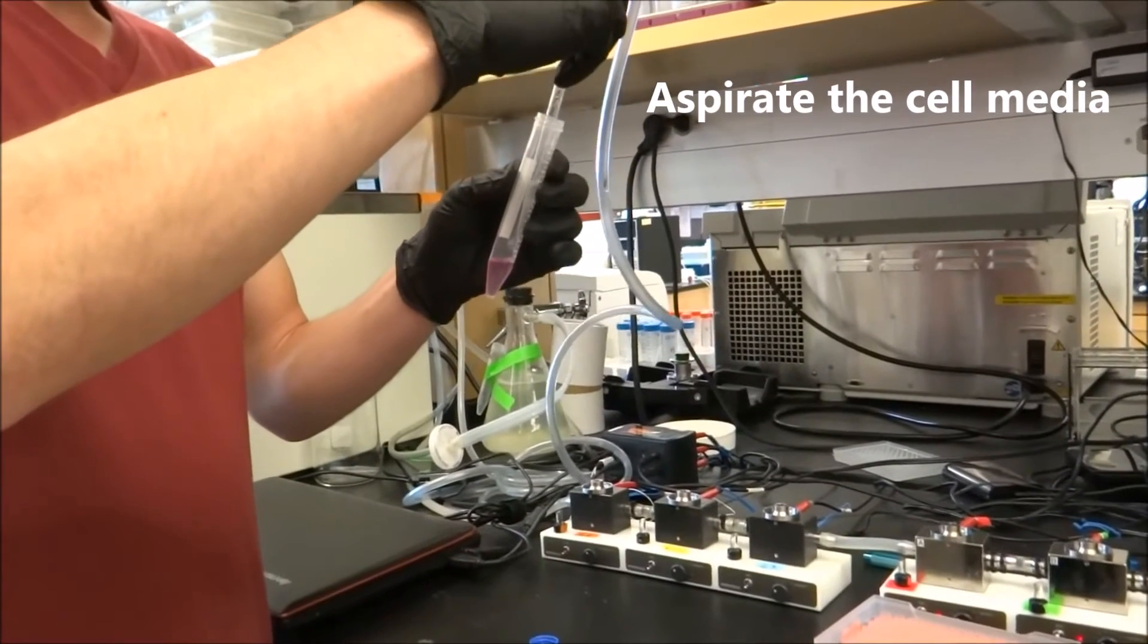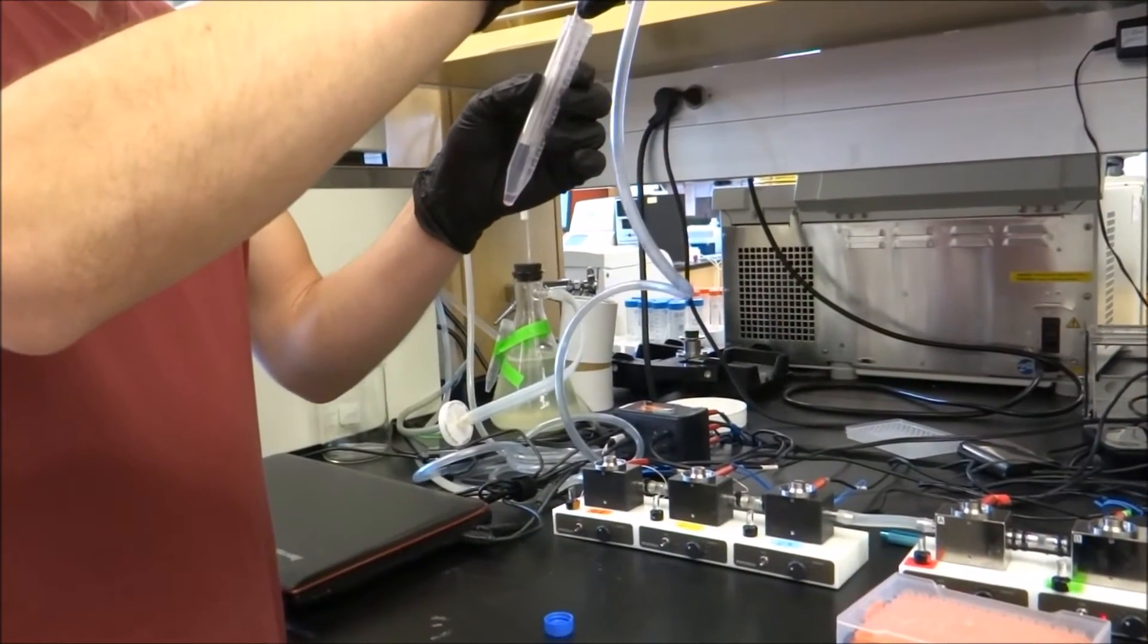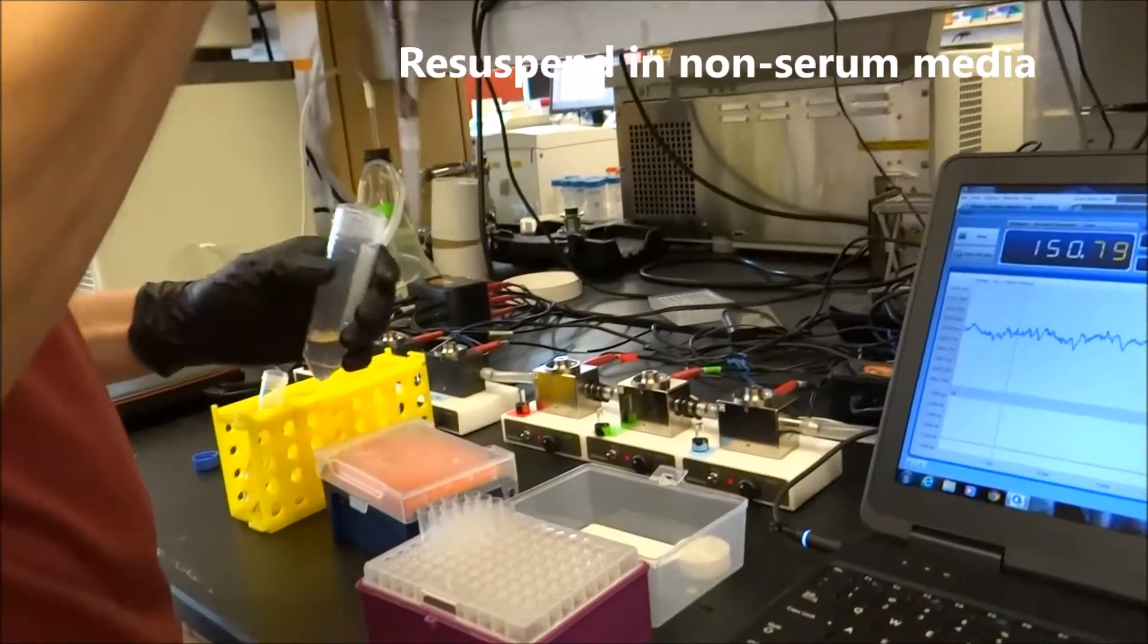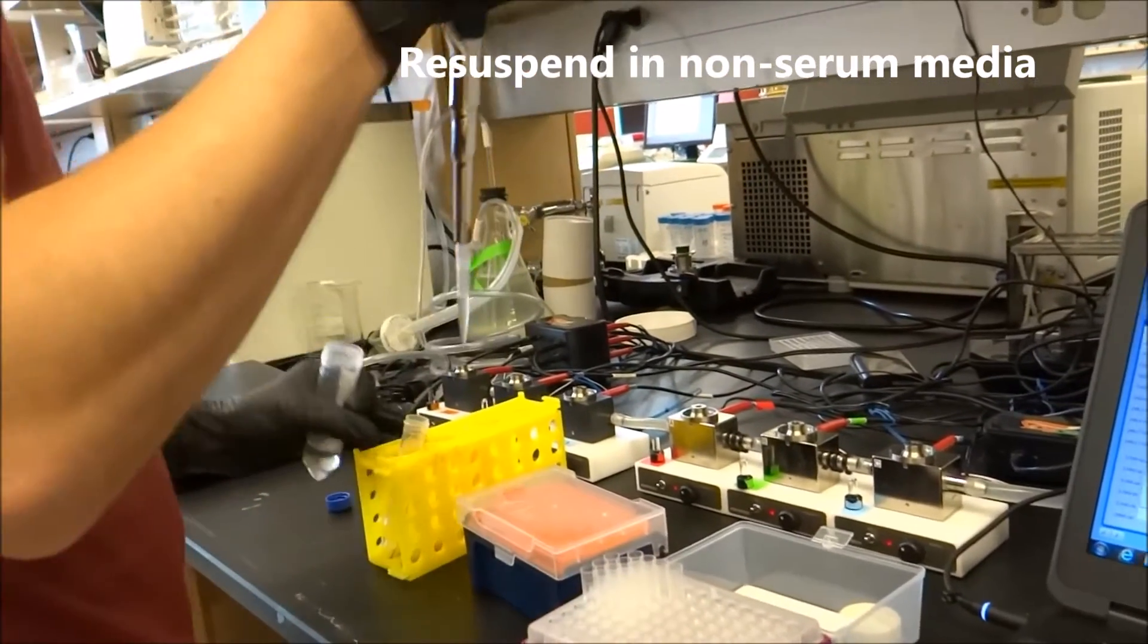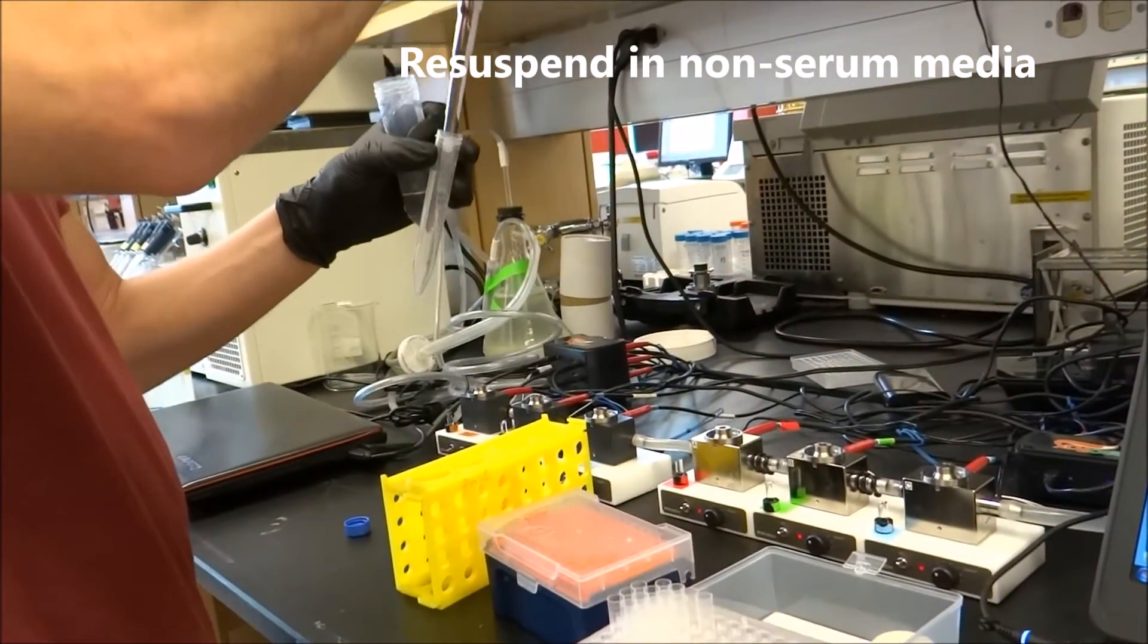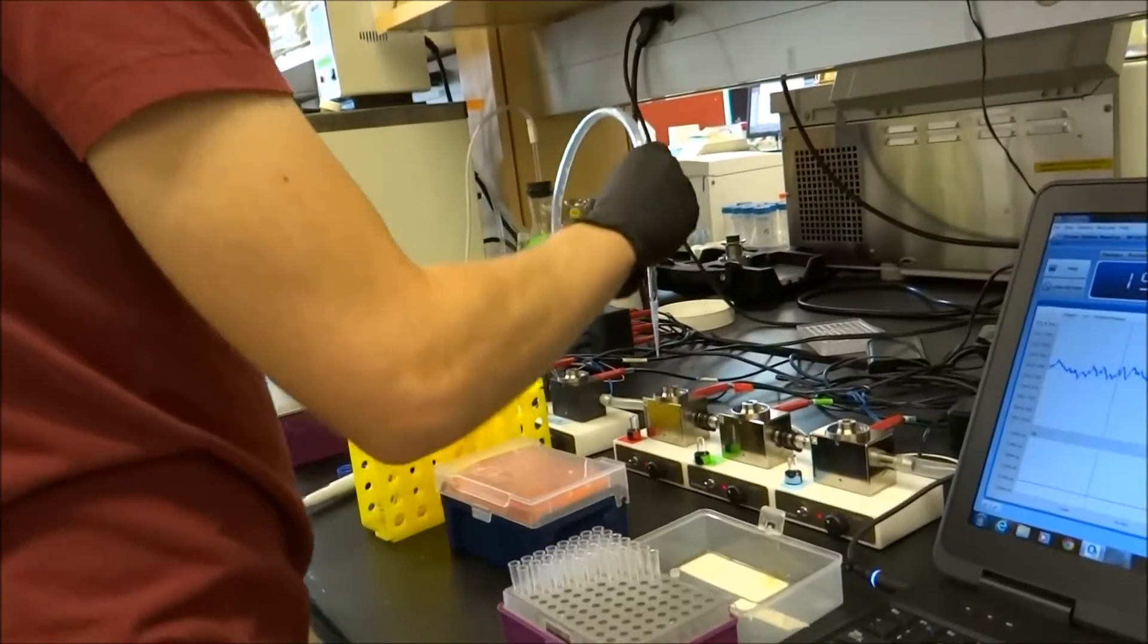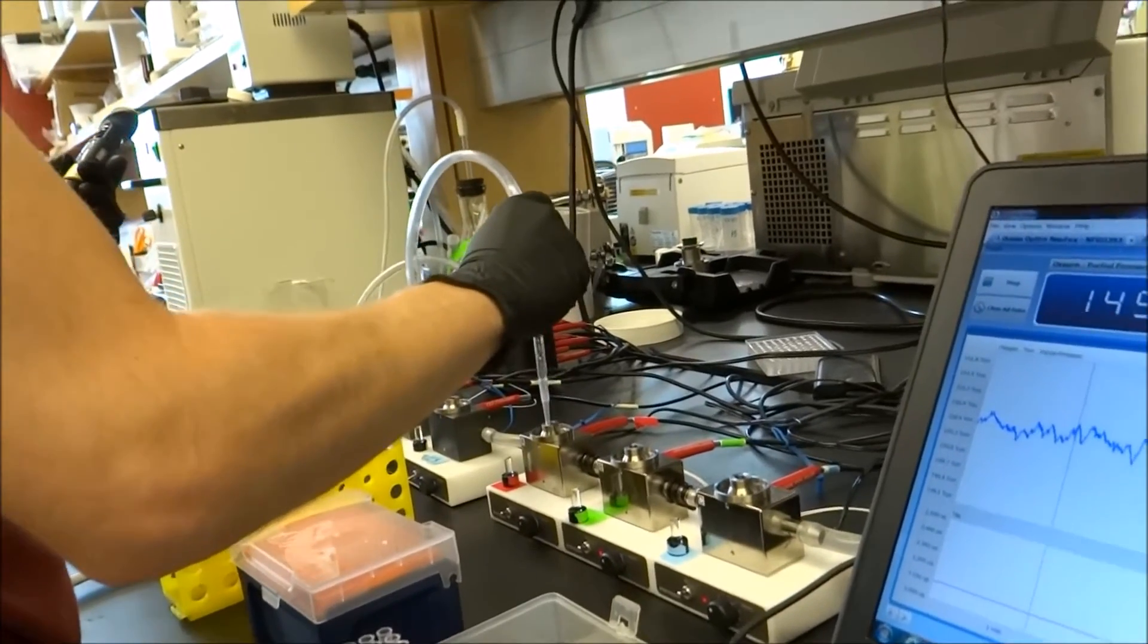Aspirate the media, making sure not to suck out the pellet at the bottom of the centrifuge tube. Resuspend the pellet in a non-serum media. The media used to prevent airflow in the chambers is removed.